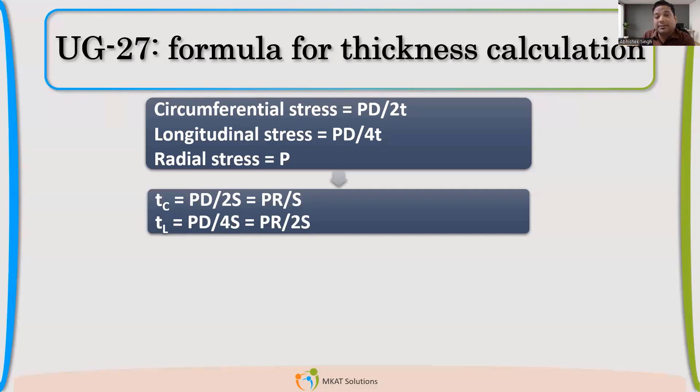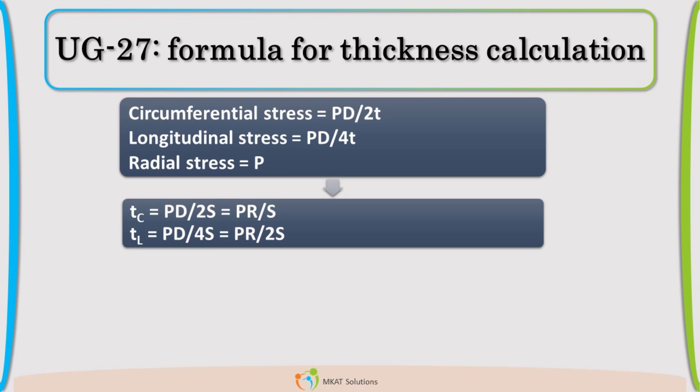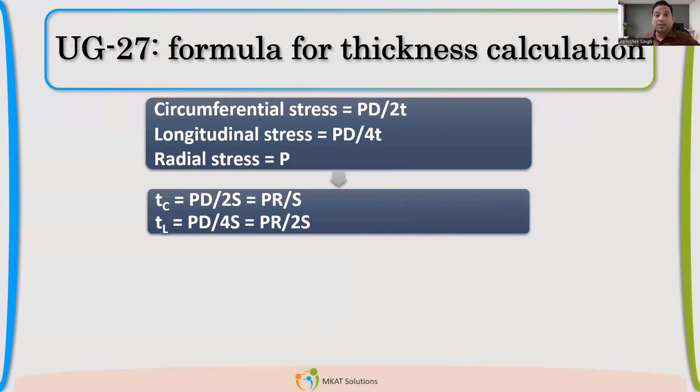Now, till now, there is no mention of joint efficiency. This is the academic formula. So it considers a very hypothetical case that shell is having without any joint. That is not possible in actual case, unless it is a forging, but still at the ends you'll have to weld, even if it is a forging, a forged shell. In normal scenario, we use plate to make the pressure vessel. So if you are welding the long seam or circumferential seam, there will be involvement of weld.